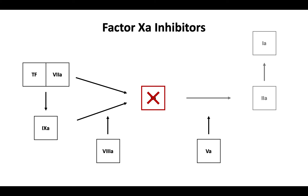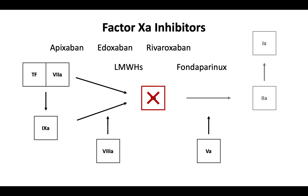Examples of direct factor Xa inhibitors include the oral agents apixaban, edoxaban, and rivaroxaban. They also include the parenteral agents, low-molecular-weight heparins and fondaparinux. Because we have previously discussed the parenteral agents, in this video we will focus our attention on the oral agents.